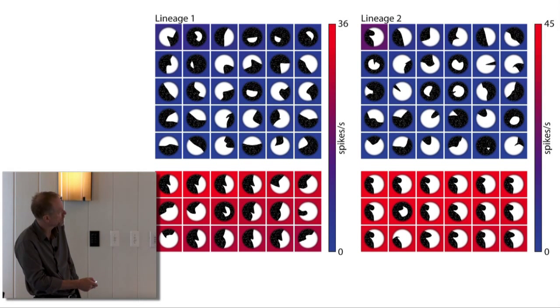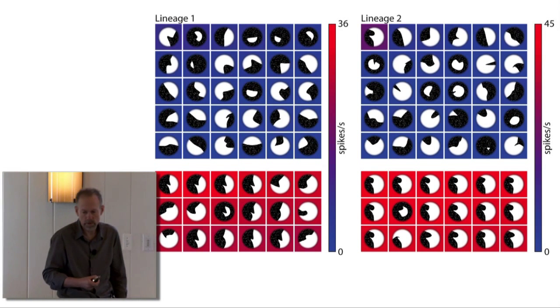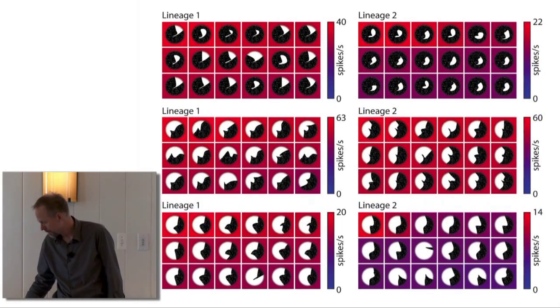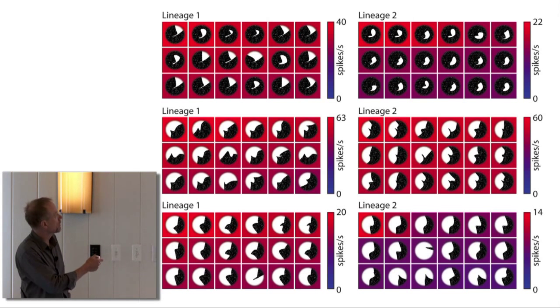Both lineage 1 and lineage 2, what's evolved for high response shapes are things that have a sharp convex curved point that's pointing towards the upper left and above that, or somewhere around in the figure, a shallower concavity. These are just some other examples, different cells showing at least qualitative convergence between lineage 1 and lineage 2.